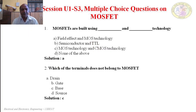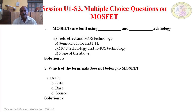Now we shall discuss multiple choice questions on MOSFETs. Question 1: MOSFETs are built using dash and dash technology. Options: A — field effect and MOS technology; B — semiconductor and TTL technology; C — MOS technology and CMOS technology; D — none of the above. The correct answer is A — field effect and MOS technology is used to fabricate MOSFETs.